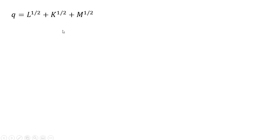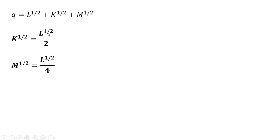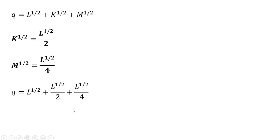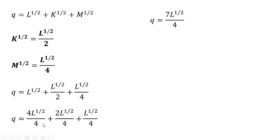Rewriting our production function and the key results from the last steps, we make substitutions: where we have K to the one-half, we replace it with L to the one-half divided by two, and where we have M to the one-half, it becomes L to the one-half divided by four. After making those substitutions and getting a common denominator on the right-hand side, adding everything up gives us 7L to the one-half divided by four.